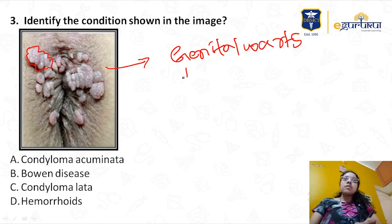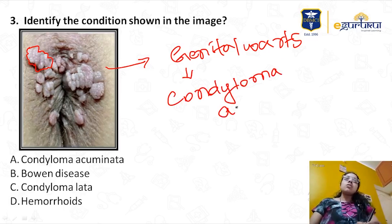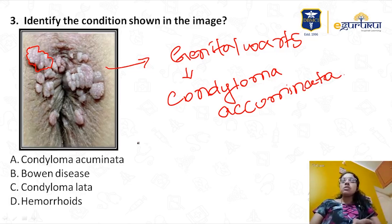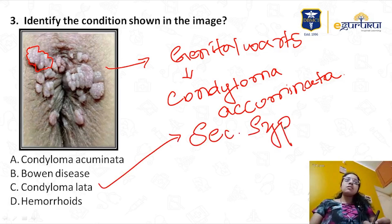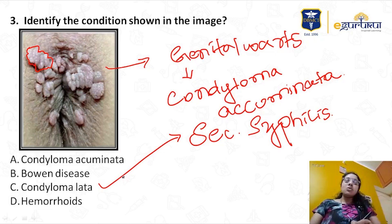It is also called condyloma acuminata, caused by HPV virus. Other options: Bowen's disease can be seen in genitalia but is not characterized by verrucous papules and is a premalignant condition. Condyloma lata is seen in secondary syphilis. Hemorrhoids are seen in anogenital mucosa and don't present like this. The correct option is condyloma acuminata.